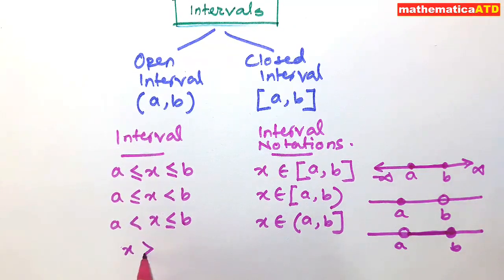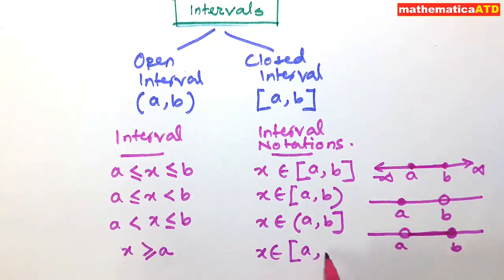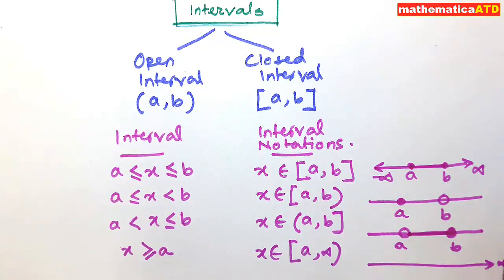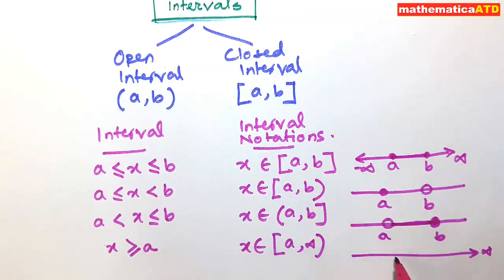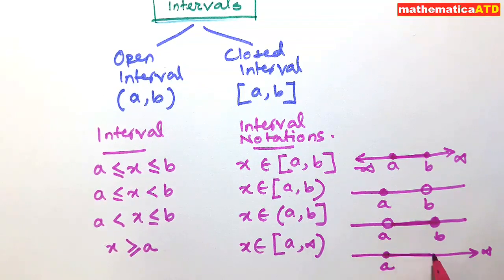Next, for x ≥ a where a is a real number, in interval notation we write x belongs to the semi-closed interval [a, ∞). On the right side of the real line towards positive infinity, the point a is included — shown as a dark ball — and all values to the right of a are also taken. So x belongs to the semi-closed interval [a, ∞).